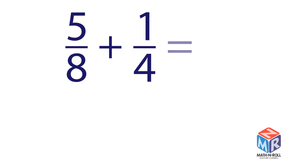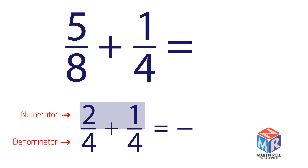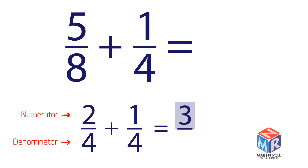5 eighths plus 1 fourth. We already know how to add fractions with like, common denominators. For example, 2 fourths plus 1 fourth. We add the numerators and keep the denominator the same. So 2 fourths plus 1 fourth is equal to 3 fourths.